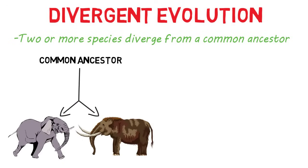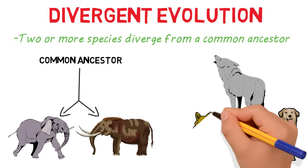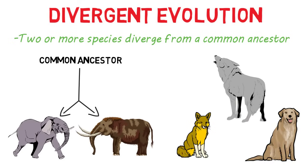Another example is the dog, the wolf, and the fox. Again, they share a common ancestor yet evolved independently — they all diverge from a common ancestor.